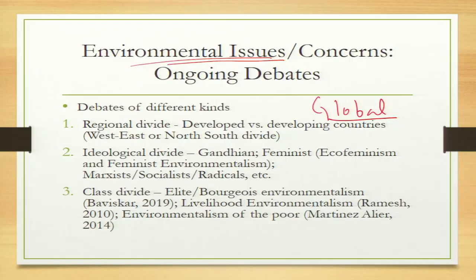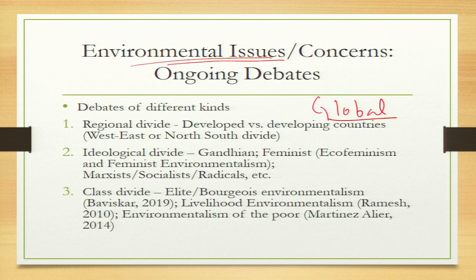Then we come to the ideological divide. There is the Gandhian way of looking at environment, the feminist way — within which there are two positions: eco-feminism and feminist environmentalism — and others like Marxist, Socialist, and Radical approaches. In political science we mainly study liberalism and Marxism, but in studying ecology and environment, we talk more about the Gandhian way of looking at things.